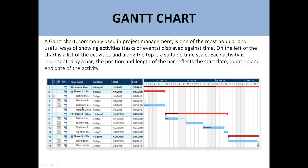For example, these are the task list, then the duration, start date, and end date. Here is the representation of each task in terms of a bar. The bar shows how much time each task will take, and what are the dependencies of each task on another. For example, when this task will finish, then this task will start, and then this will finish, then this will start.